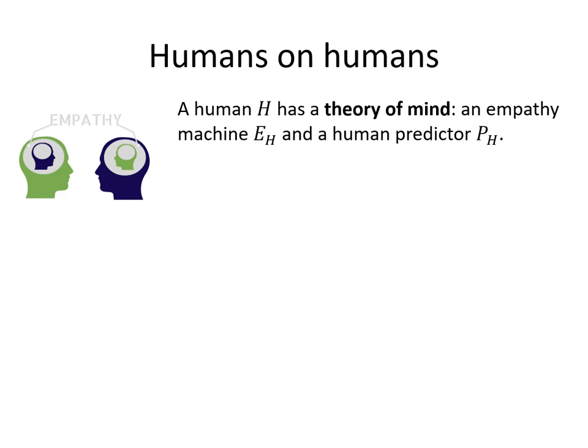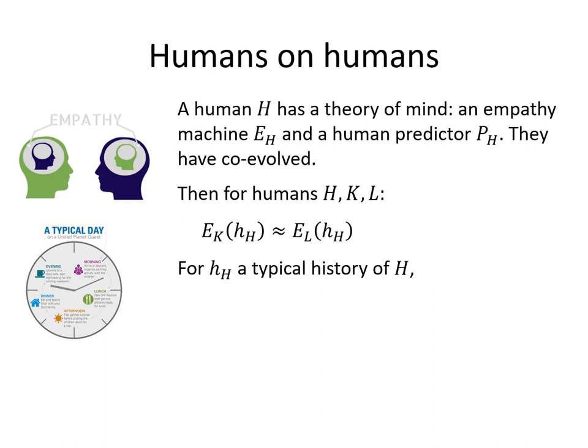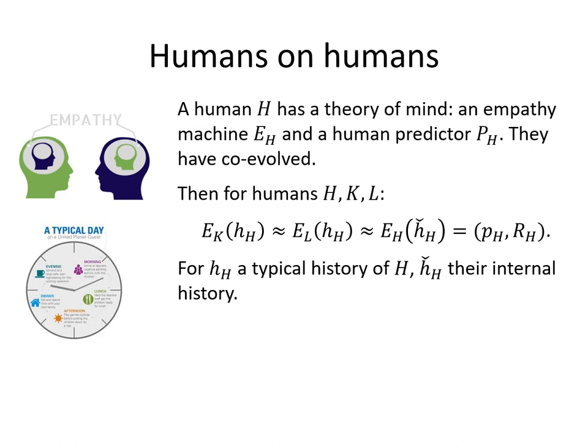Humans have a theory of mind, which I'm going to model as an empathy module and a human predictor. These have co-evolved. For three humans and the typical history HH for a human H, the empathy module applied to this history by both humans K and L are roughly the same thing. So humans' theories of mind are quite similar from one human to another.